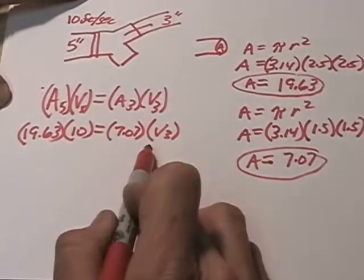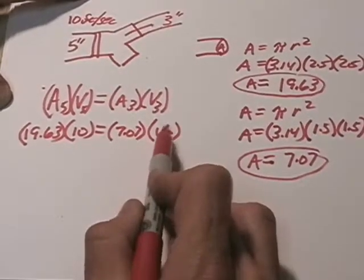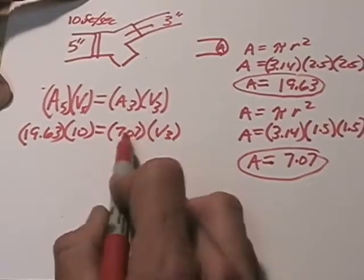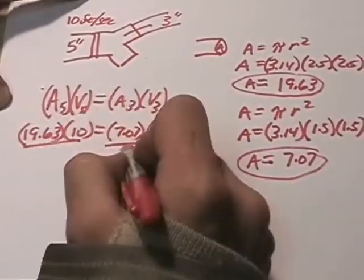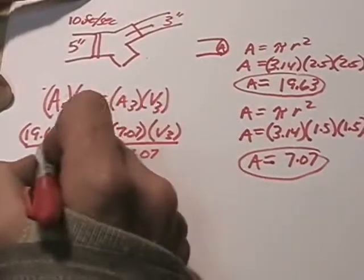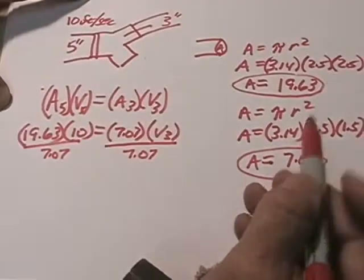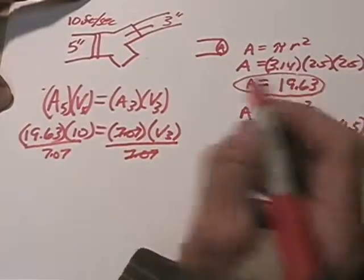Anytime you have an equation in algebra where you've got one unknown, we need to get that all by itself. So we need to get rid of the 7.07. The easiest way to do that is divide both sides by 7.07. As long as we do it to both sides, it's fair. We're going to cross 7.07 and 7.07 off.